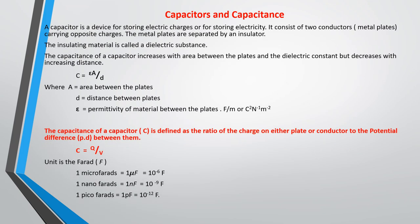Capacitors and capacitance. What is a capacitor? If you look at many electrical devices, you will see a capacitor in them. If you check some electrical boards, especially power boards, you will see capacitors. They are devices that are used to store electrical charges or for storing electricity. A simple capacitor normally consists of two conductor metal plates carrying opposite charges. The metal plates are separated by an insulator called a dielectric substance.